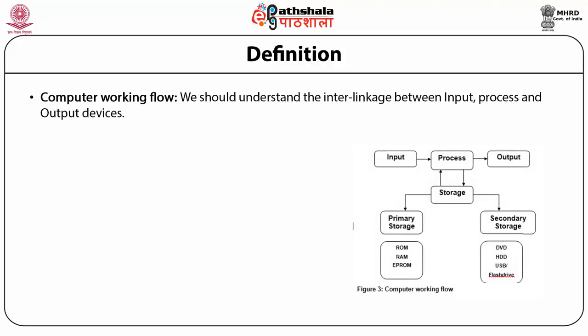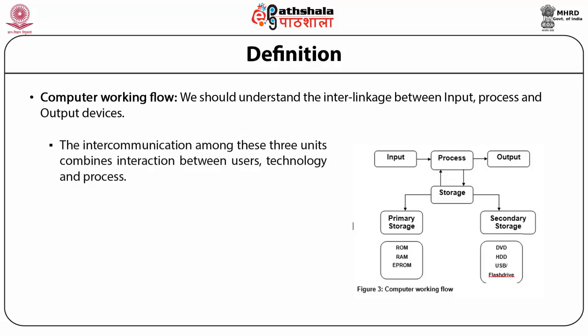We should understand the interlinkage between input, process and output devices. Interconnection among these three units combines interaction between user, technology and processes. Figure three illustrates computer working flow, showing that processing is directly linked with storage. Storage could be of two categories: primary storage and secondary storage. Primary storage has three further categories — ROM, RAM and EPROM — whereas secondary storage consists of DVD, HDD, USB and flash drives.